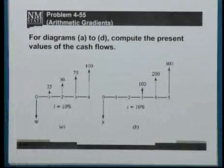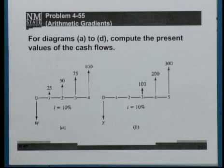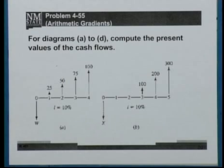Hi everyone, welcome back. So today we will continue to solve the end of chapter 4 problems. The very first problem we are going to solve is 4-55, which is about the arithmetic gradient. For each cash flow diagram in parts A through D, we are required to compute the present value of the cash flows.